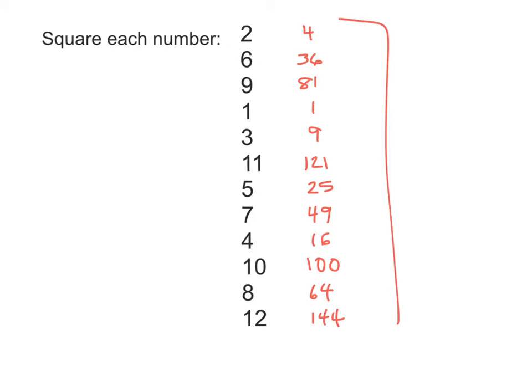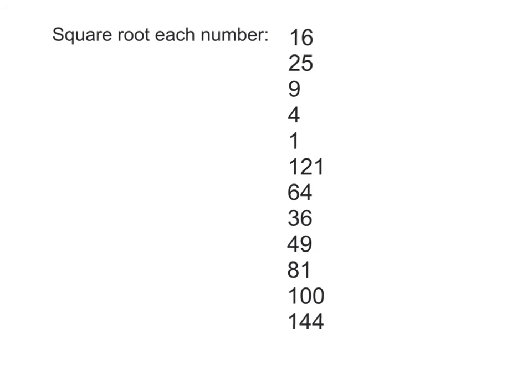Now, on the next screen, we're going to take these kind of values, and we're going to square root them to see if we can come up with the number that you get when you square root. So, again, go ahead, square root each number, and see if you can get these on your own, and then check to see how you did. Alright, the square root of 16, meaning what times itself gives us 16? That is 4. 25, that's 5 times 5. 9, 3 times 3. 4 is 2 times 2. 1 is 1 times 1. The square root of 121 is 11. The square root of 64 is 8. 6 times 6 is 36. Sorry. 49 is 7. 81 is 9. 100 is 10. And 144 is 12.